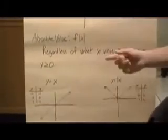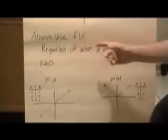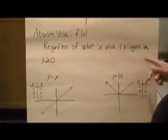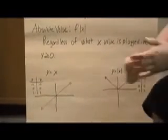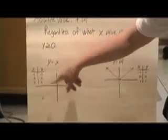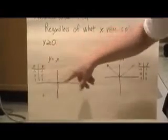Next is absolute value functions. You see here f of absolute value of x, and the best way to define this is: regardless of what the x value is plugged in, y is greater than or equal to 0. This is best shown in the comparison of y equals x and y equals absolute value of x. In this graph, for y equals x, when x equals negative 1, y equals negative 1. When x equals 0, y equals 0, and when x equals 1, y equals 1.